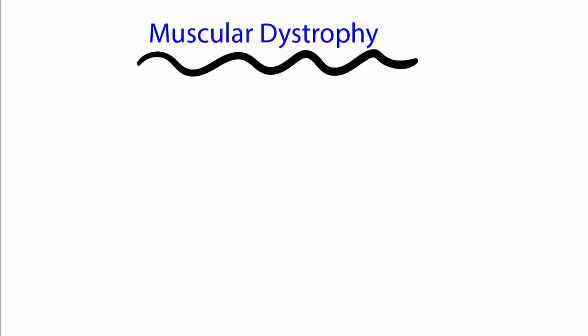Muscular dystrophy. Muscular dystrophy is a disease that causes the degeneration and necrosis of skeletal muscle fibers, which results in muscle weakness. By the way, necrosis means cell death, if you didn't know.